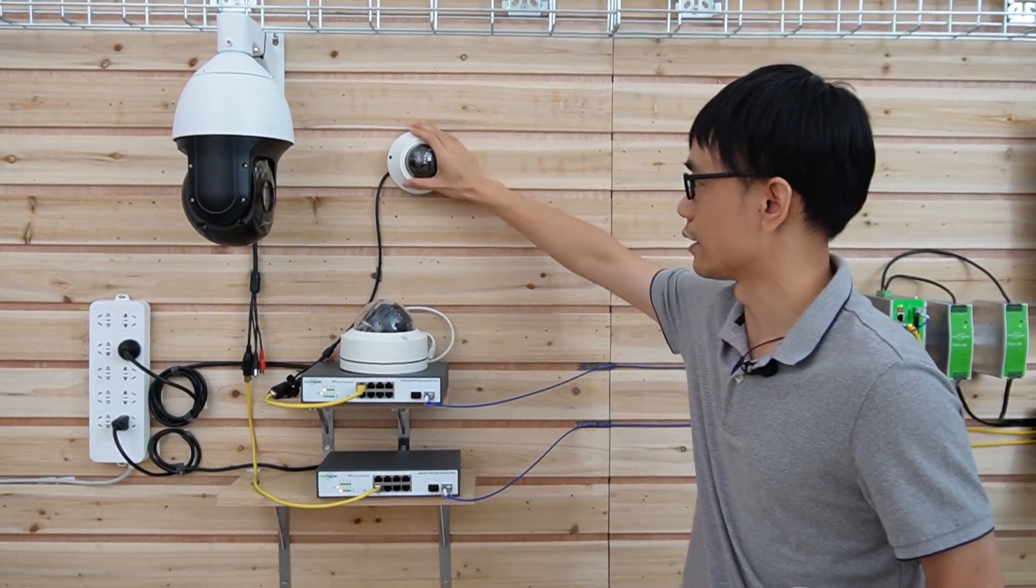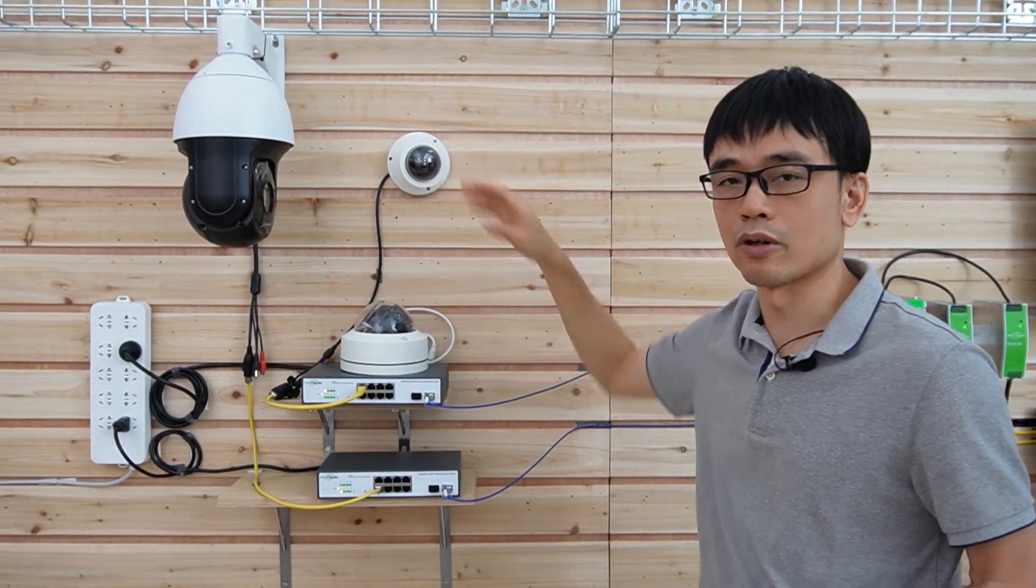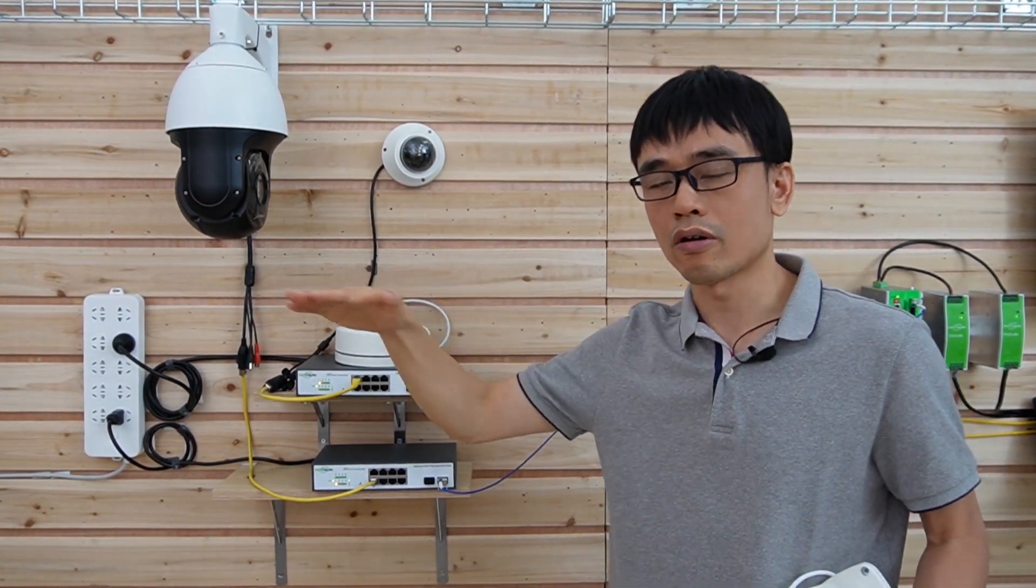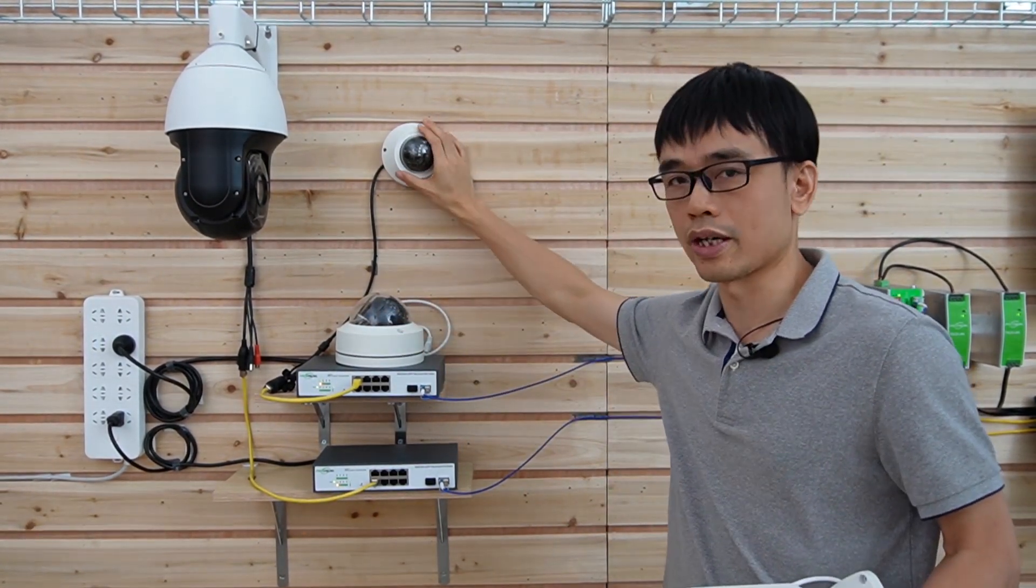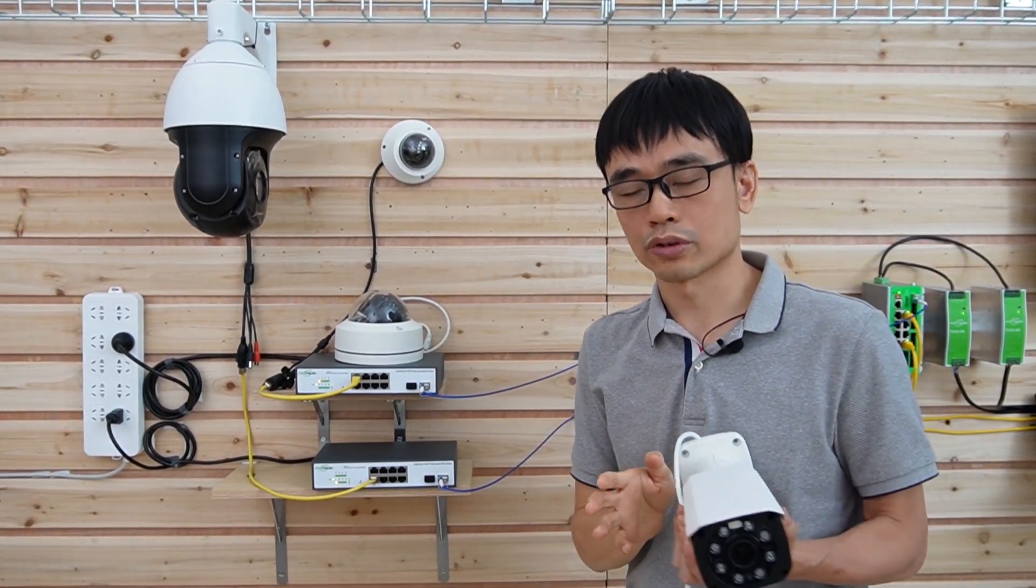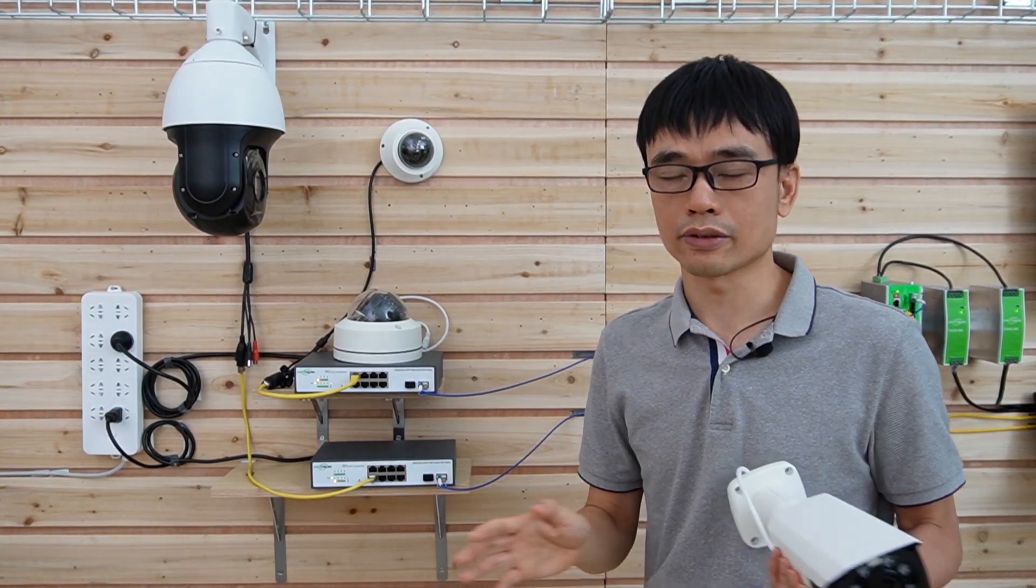For the meeting room, we may need this small dome camera. It looks nicer. Also, on each floor, we can use this small camera, even in the elevator when people walk out, because this camera has a wide angle of about 90 degrees.